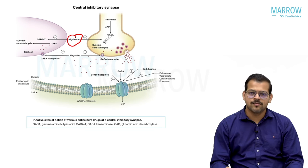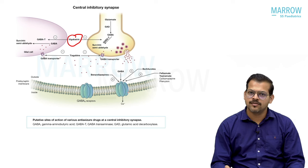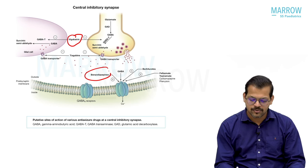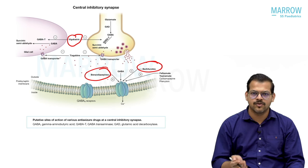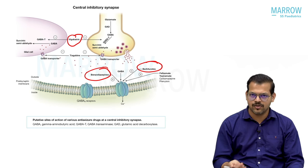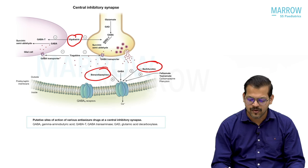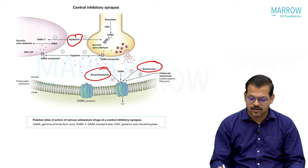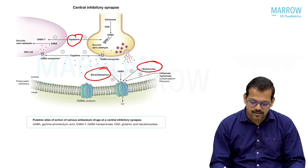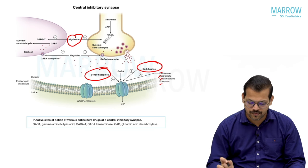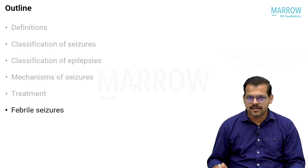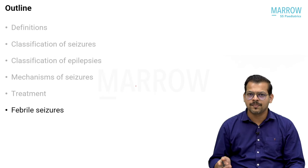At the GABA receptor level, the two most important drug classes are benzodiazepines and barbiturates (phenobarbitone). Benzodiazepines include midazolam, clobazam, clonazepam, lorazepam, etc. Other drugs that also have action at the GABA receptor include felbamate, topiramate, carbamazepine, and phenytoin.